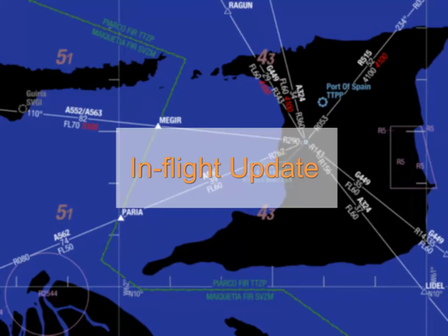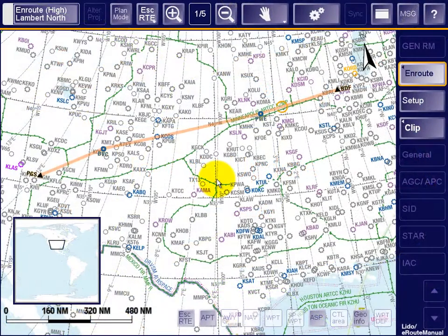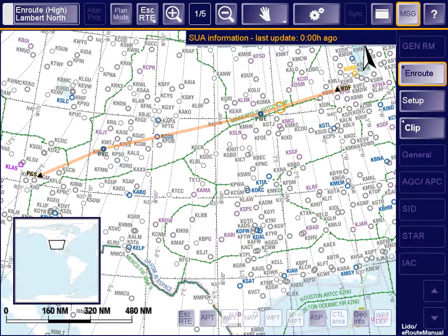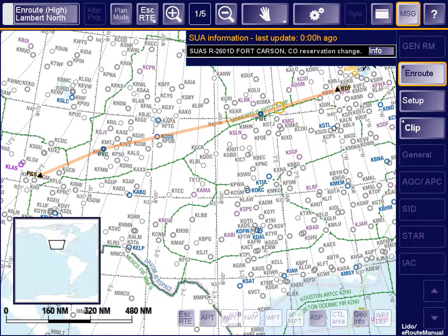While airborne, the airspace activation data is kept up-to-date by notifications from the Event Service. Sometime into the flight, a reservation change for one of the SUAs along the route is received. By selecting the notification entry, the SUA shape is highlighted on the map, and the SUA can thus be easily identified.